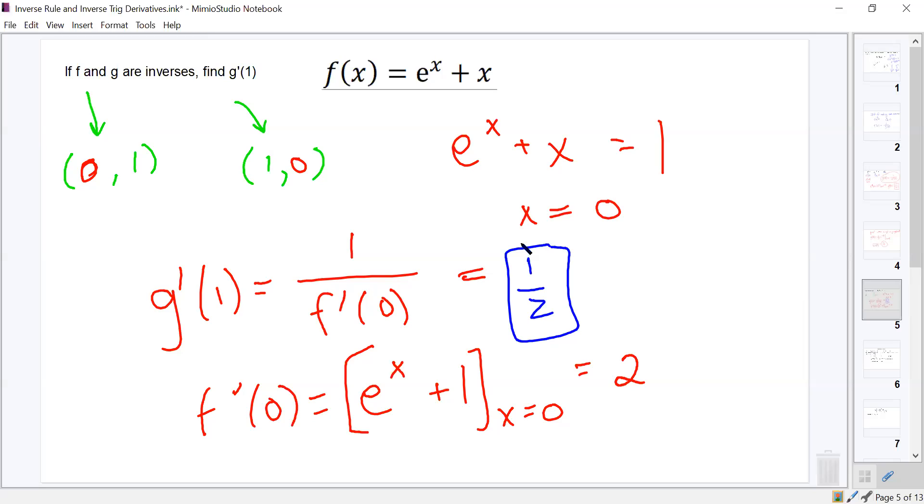Good. Any questions on that? That's the inverse rule. It always pops up at least once every year on the AP test. Except in years like last year where it was weird. But, normally there's one problem that you gotta use the inverse rule for. Or more, but at least one.